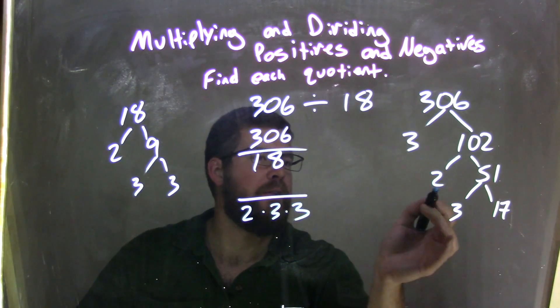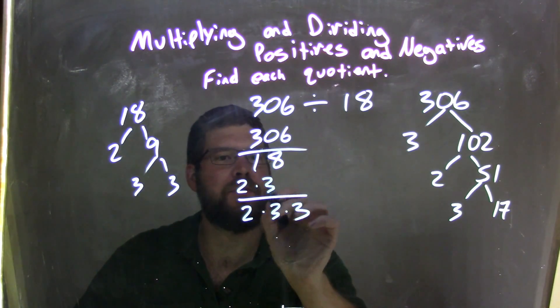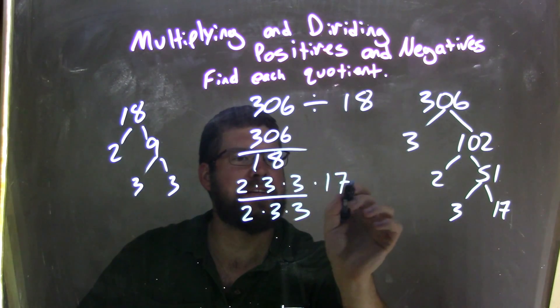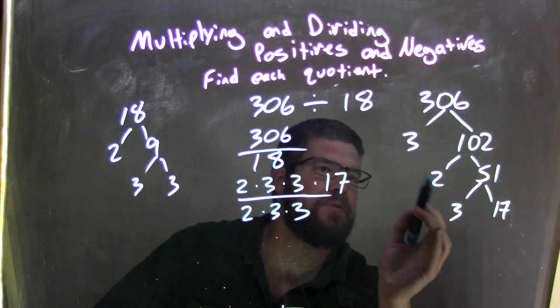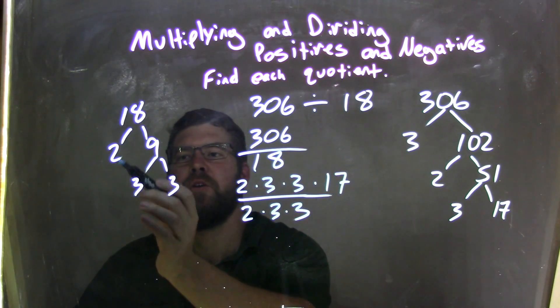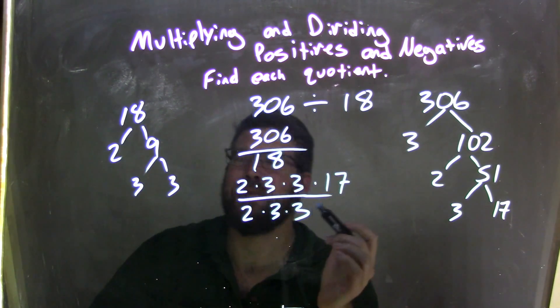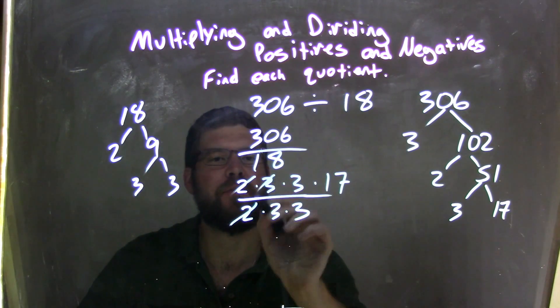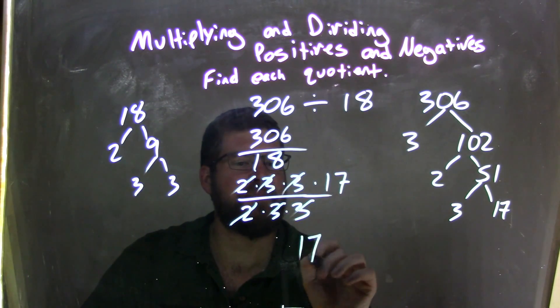The numerator is this prime factorization, 2 times 3 times 3 times 17. I kind of rearranged it, but 2 times 3 times 3 times 17, the numerator, which is 306, and 2 times 3 times 3 down here, which is 18. 2s cancel, 3s cancel, and we're left with 17, which is our final answer.